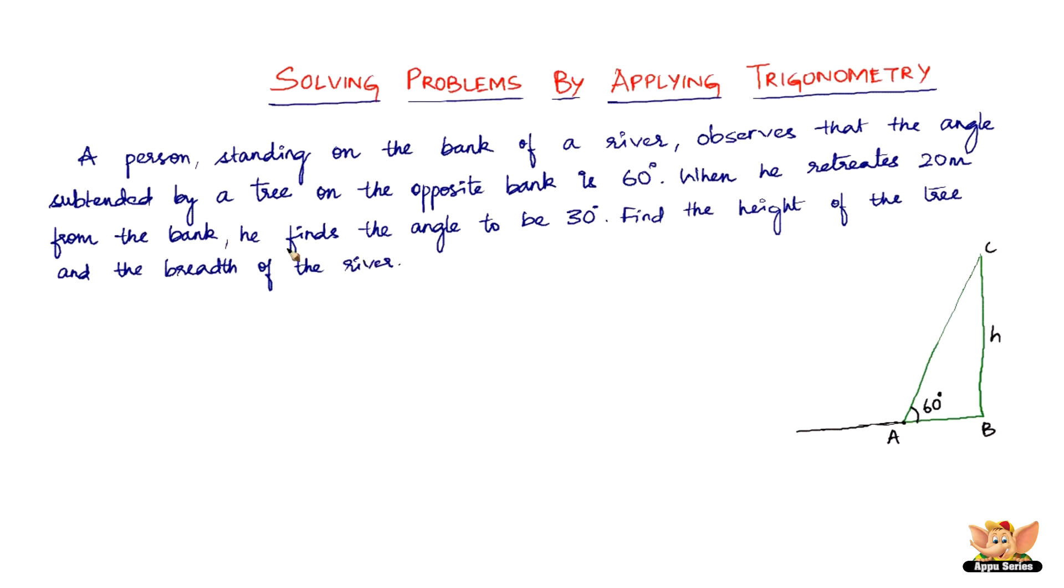Now from this point, he finds the angle to be 30 degrees. The tree would subtend an angle of 30 degrees, because the distance is more. As you go away, the angle decreases. As you go close to the tree, the angle will try to reach 90 degrees. So this is 30 degrees. He was at A and has come back 20 meters. Let the width of the river be x meters and let the height of the tree be h meters.